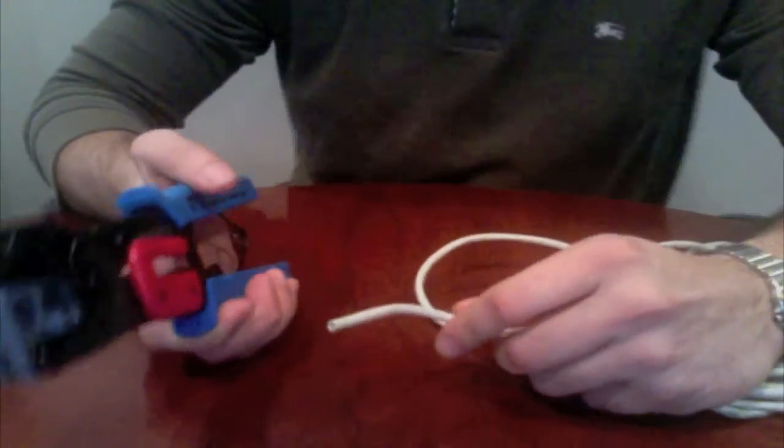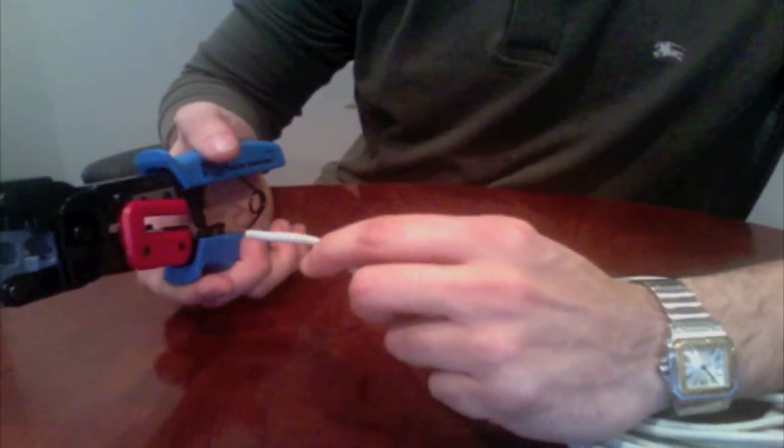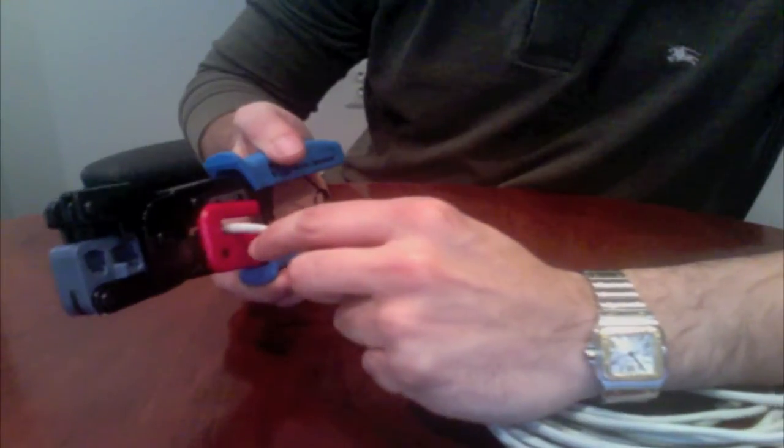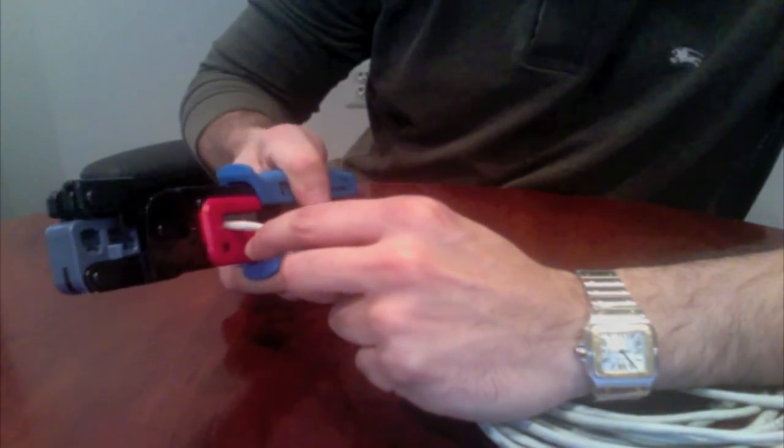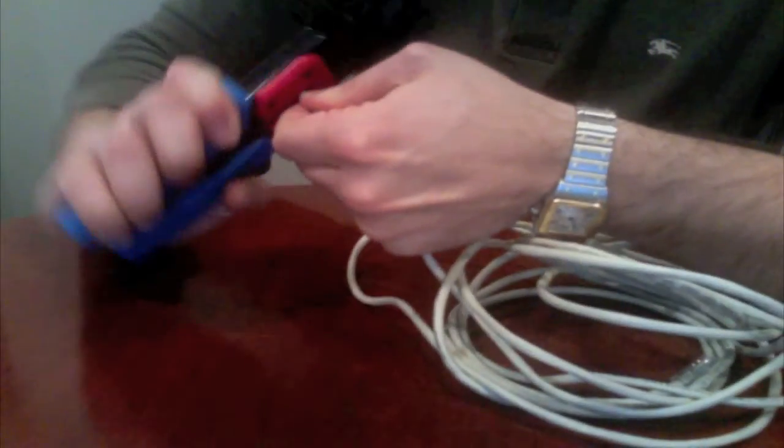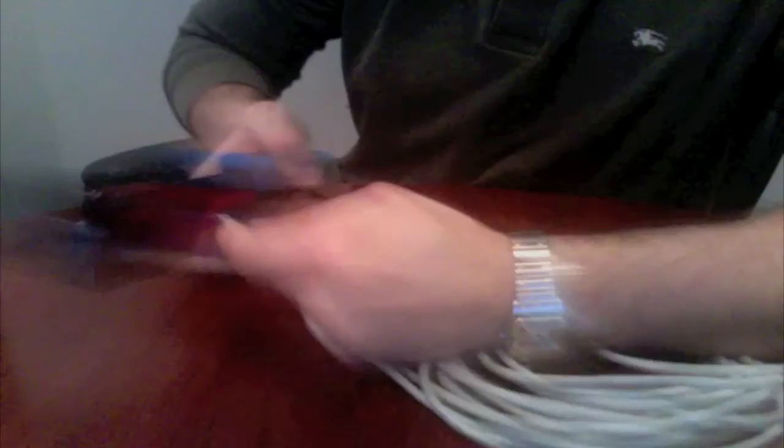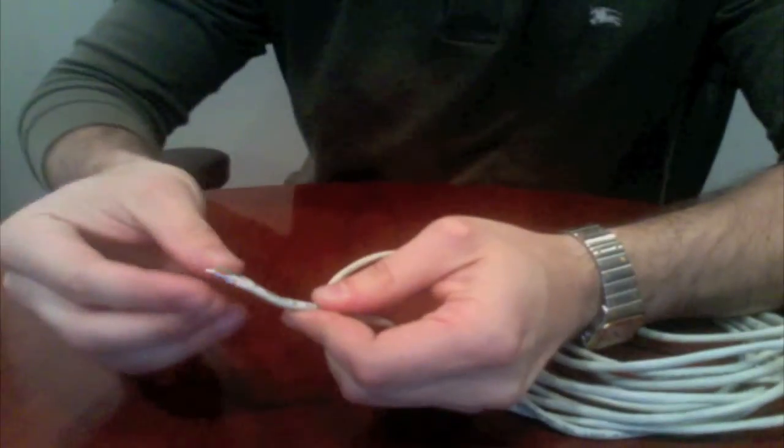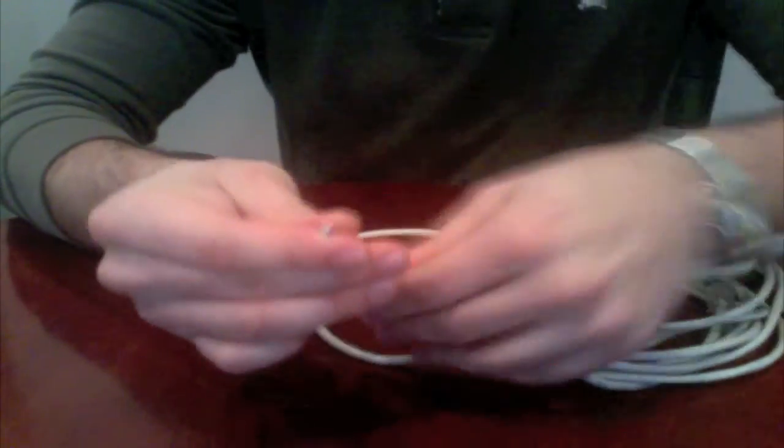Now before we can attach the RJ45 connector, we first have to strip the cable. Use the strippers on your crimping tool. Twist it a little bit. Then just pull and voila. The wires are exposed.